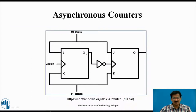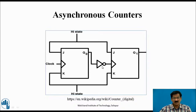This is a 2-bit asynchronous counter using two JK flip-flops, FF0 and FF1. The J and K inputs of both flip-flops are permanently connected to logic 1, so they can be treated as T flip-flops. The clock signal is given to the first flip-flop FF0, and the output Q0 is connected — by inverting it — as a clock input to the next flip-flop. This makes it an asynchronous counter where the output of the previous flip-flop serves as the clock to the next.